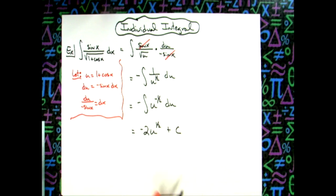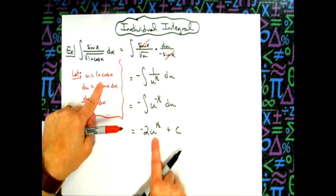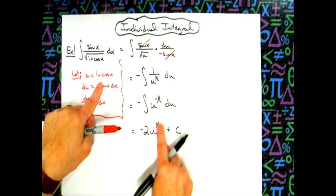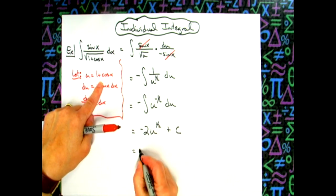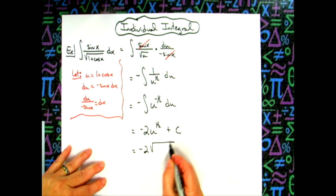And then as a final step, we'll replace u with what we said it was going to be, and I'll go ahead and write this as a square root. So we'll have negative 2 square root of 1 plus cosine x, and then plus c.